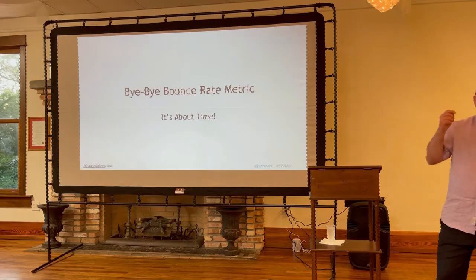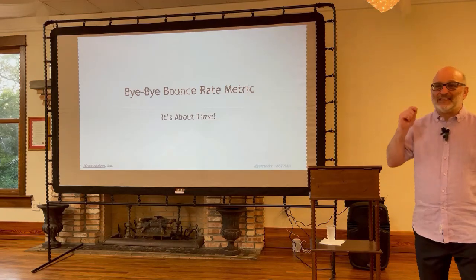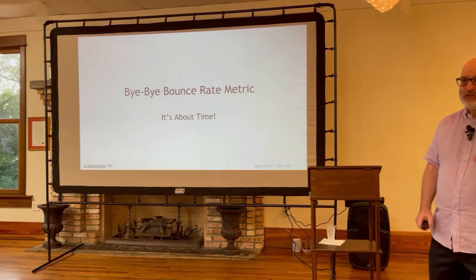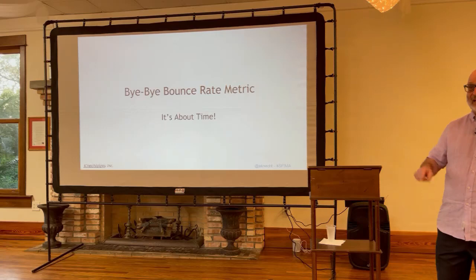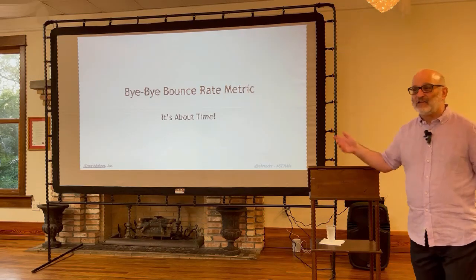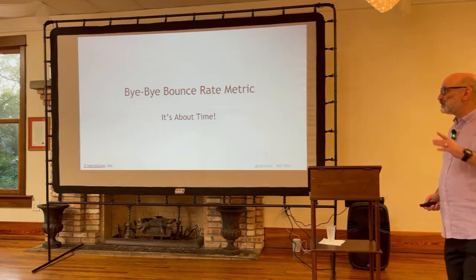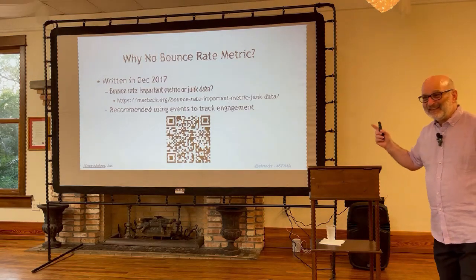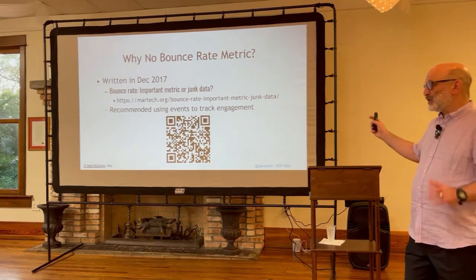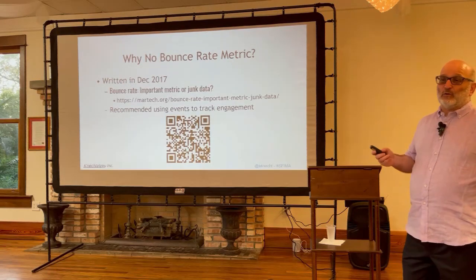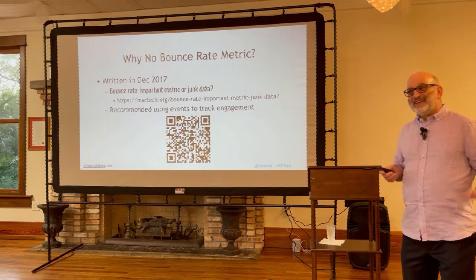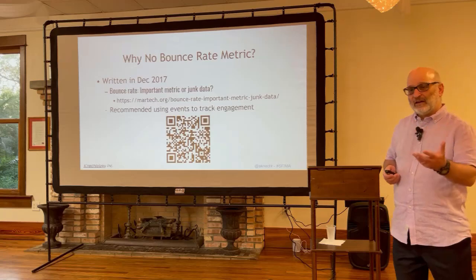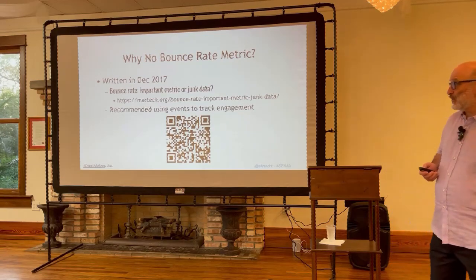People didn't really understand it, but it was an easy number that looked impressive — 'we improved the bounce rate.' You could just put a blinking jumping monkey on the page and drop your bounce rate. I've been arguing for getting rid of it since 2017 — I had an article about it, and I always like to think Google read my article. In that article I also talk about putting in custom events so you can actually track proper engagement.